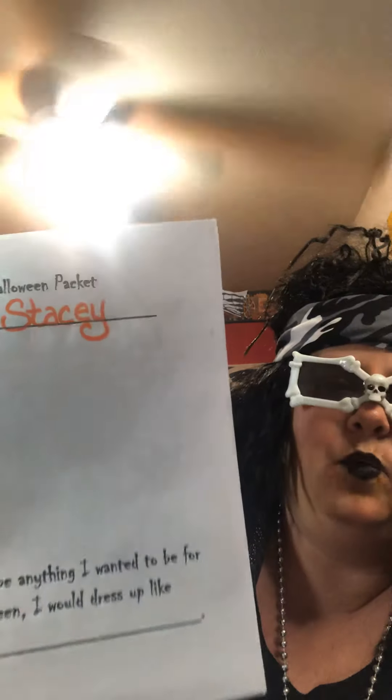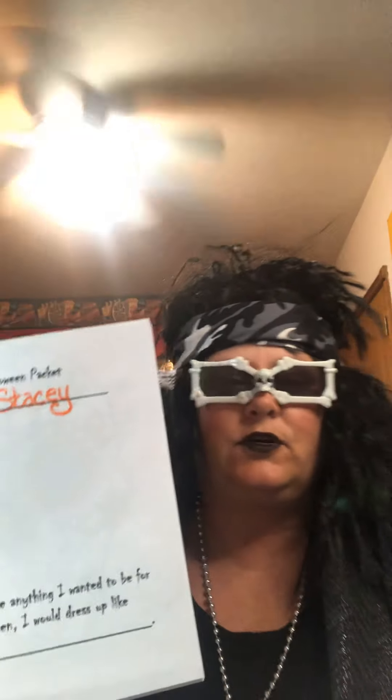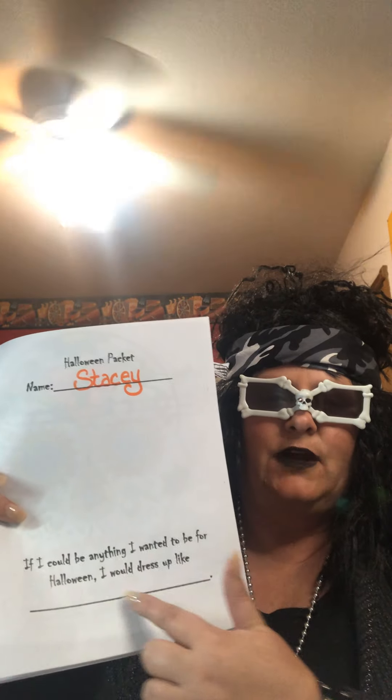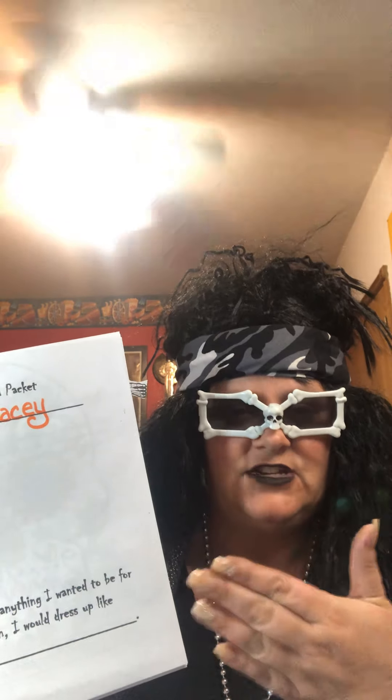You're going to be getting this packet this week. On the cover, you are supposed to draw a picture of what you would be for Halloween if you could be anything that you wanted to be — if you could dress up like any single thing and it didn't matter how much it cost or how good the makeup had to be. You're going to draw an illustration and write what it is, because our skill this week is visual imagery. That is where you make a picture in your mind using the information you've been given of what you think something should look like.